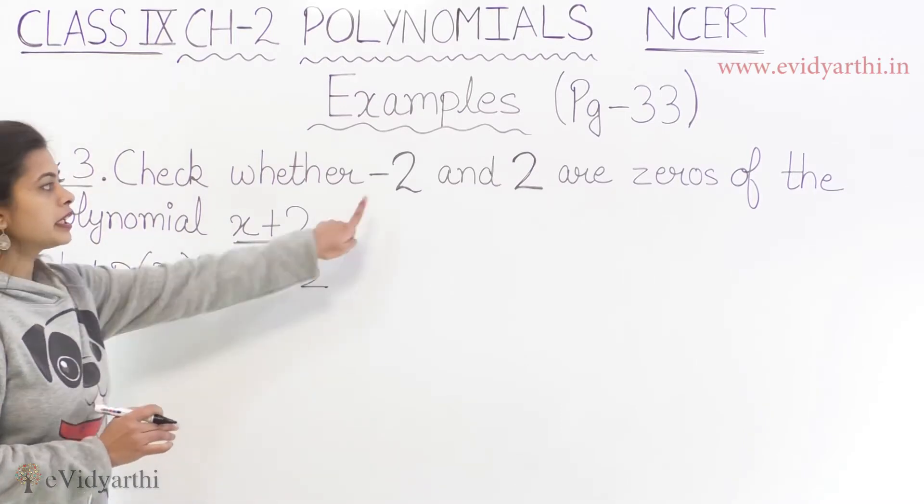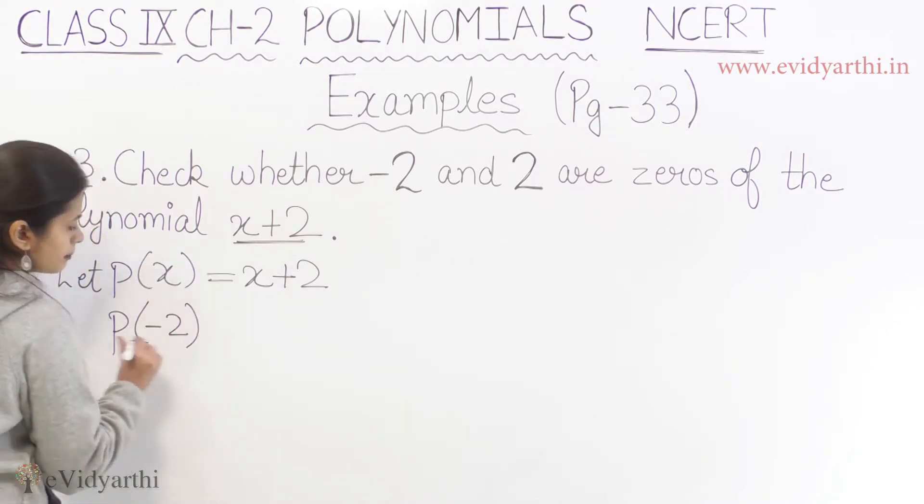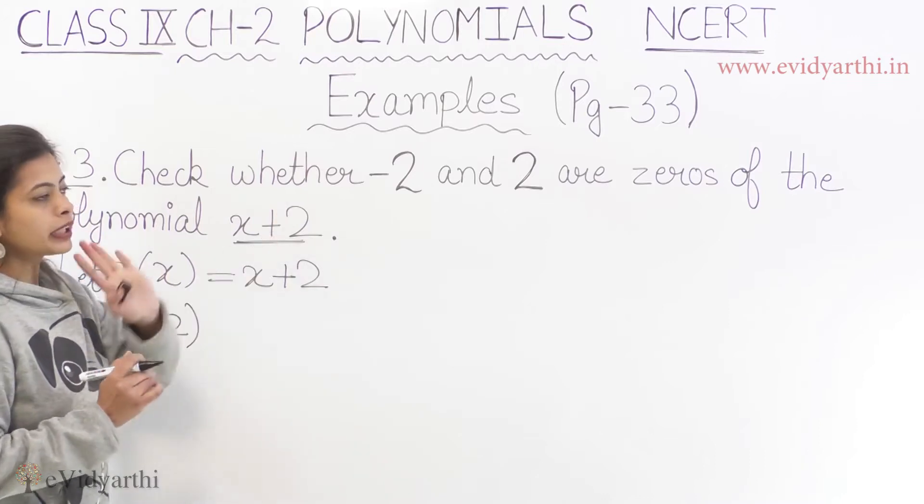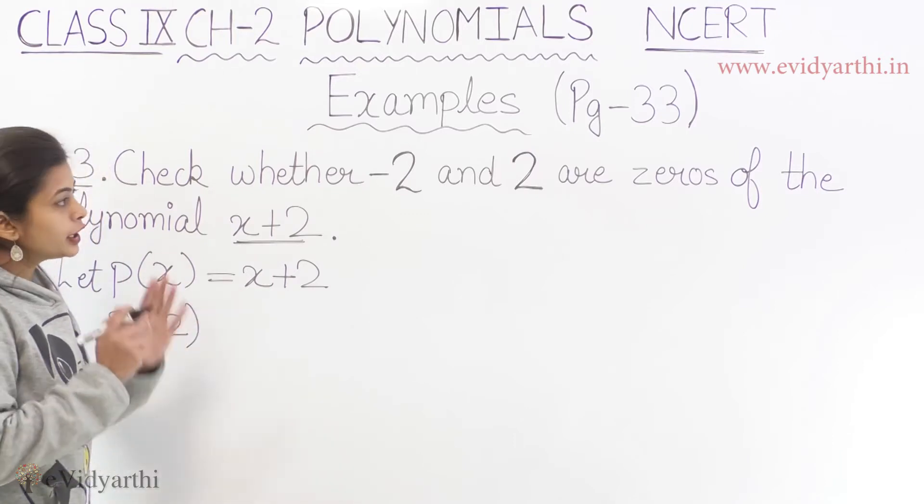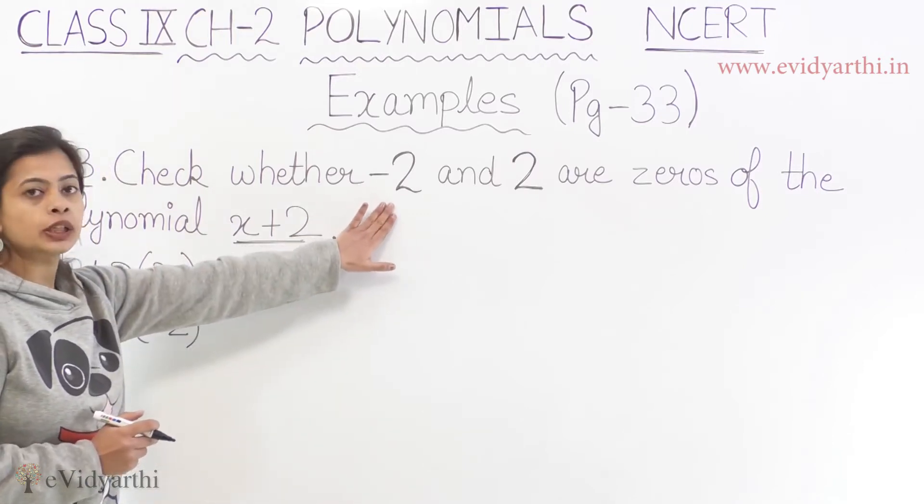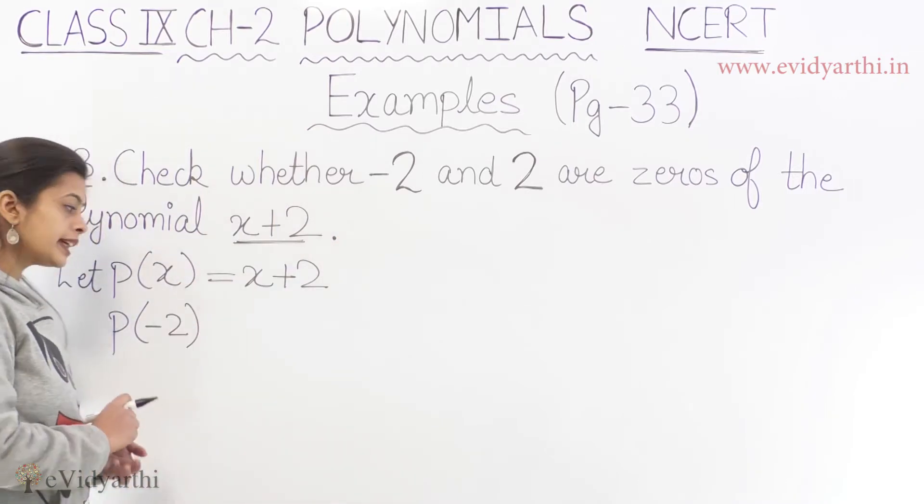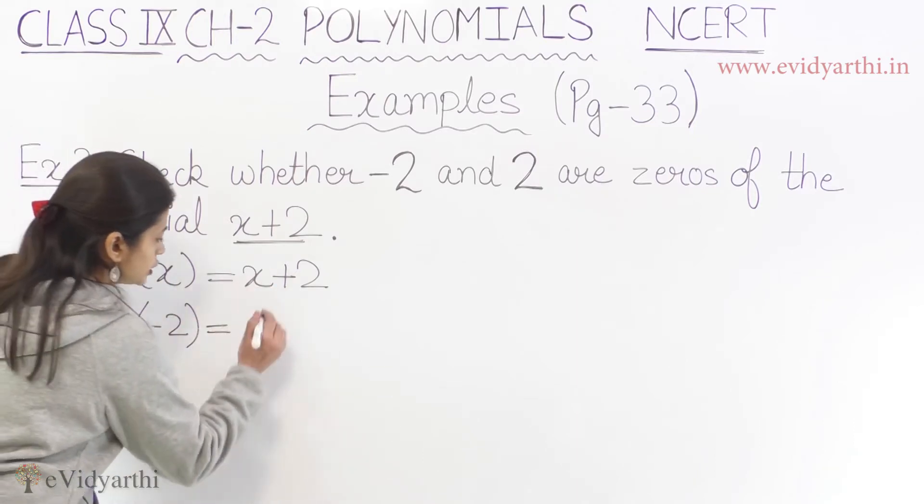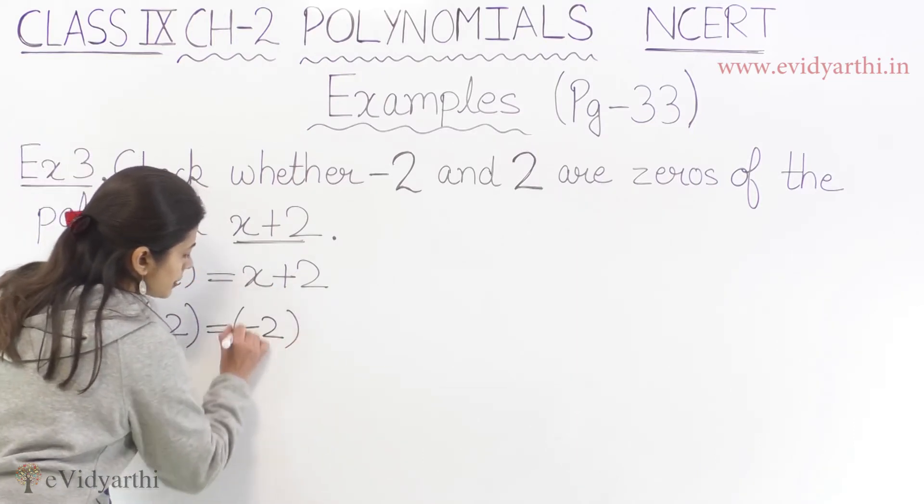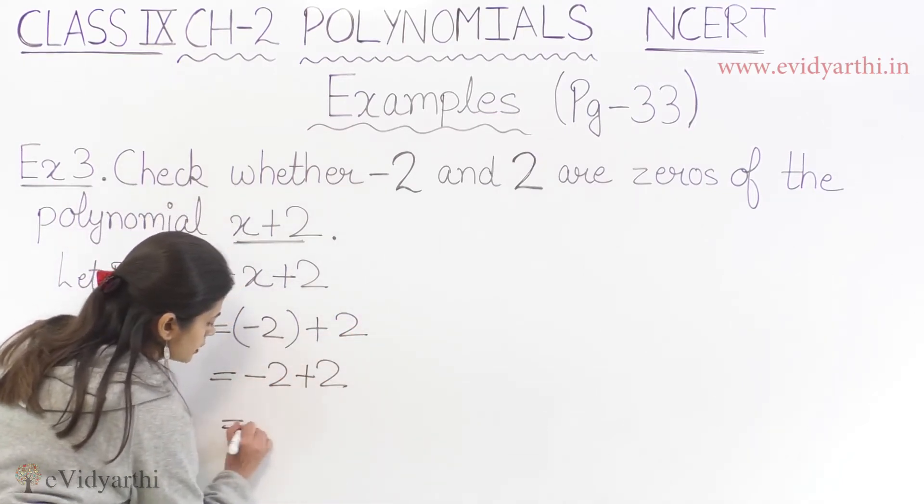Now what do we do? We have to check minus 2 value. So what do we do? We substitute minus 2 value. And if we get the answer 0, then we can say that the required number which we have taken is a zero of the given polynomial. So what do we do? First of all, we check P of minus 2. So here we have minus 2 plus 2. So what will be minus 2 plus 2? It will be equals to 0.